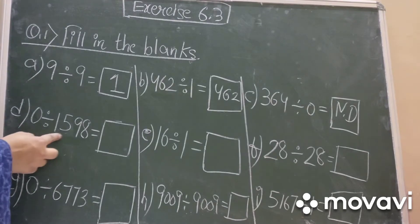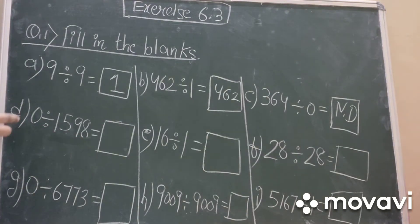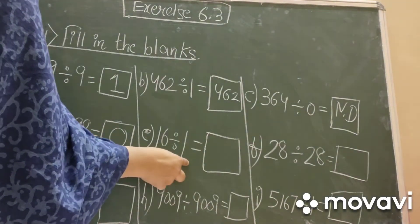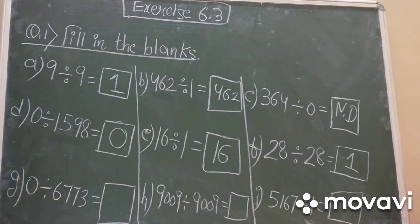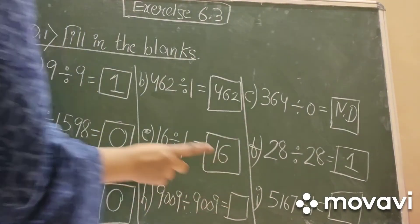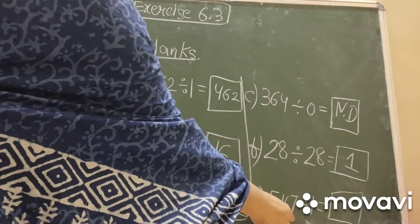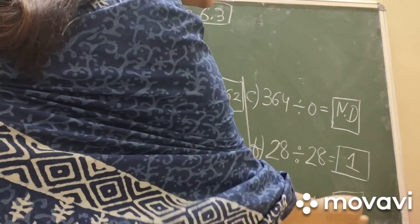Part D: zero divided by 1598 — we are dividing zero by a number, which is the third property, so the answer is always zero. Part E: 16 divided by one — the answer is 16, the number itself. Part F: 28 divided by 28 — it is one. Part G: zero divided by 6,773 — zero divided by any number is zero. Part H: 9009 divided by 9009 — the same number divided by itself gives one. Part I: 5,167 divided by one — the answer is the number itself, 5,167.